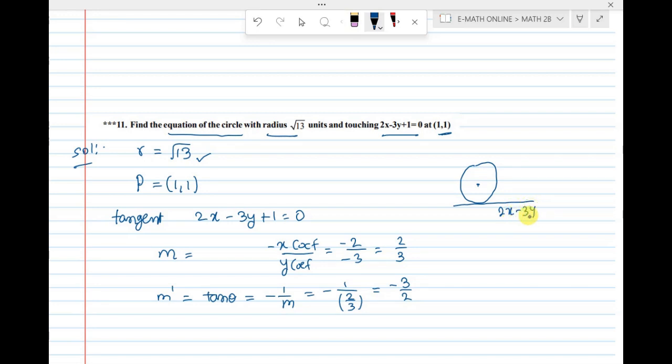The circle we have. This tangent equation we need: 2x minus 3y plus 1 equal to 0. Center from tangent, how it is? It is perpendicular. Therefore, if you see the center, the line from center to this point, it will be perpendicular to the tangent.